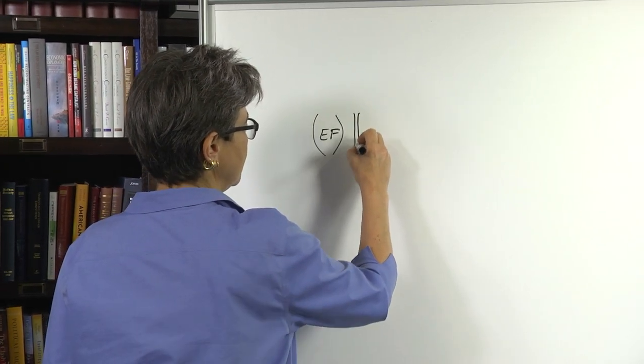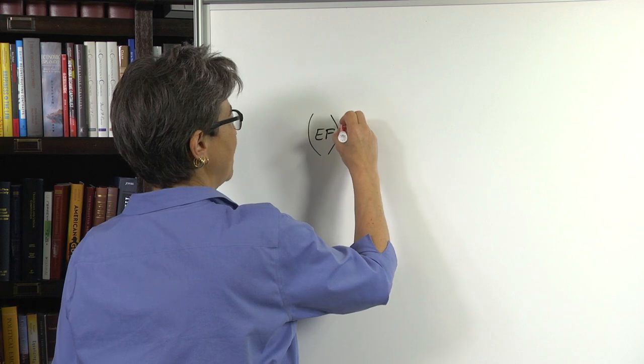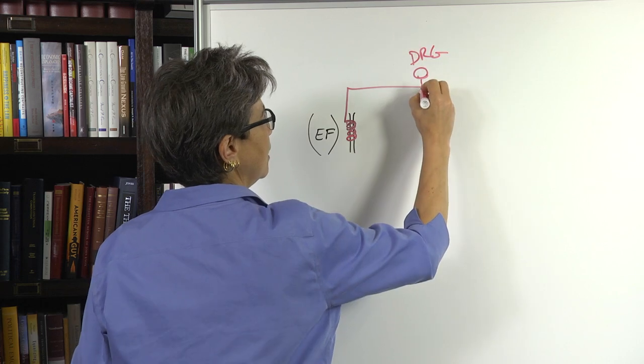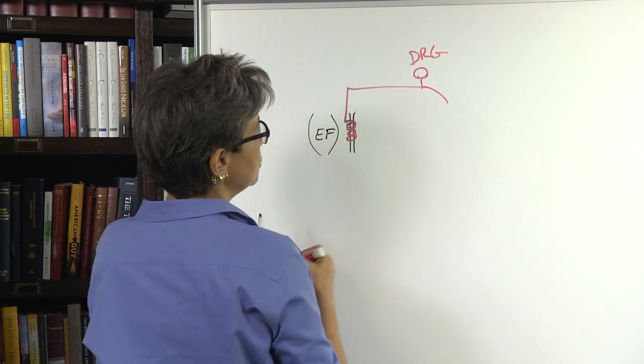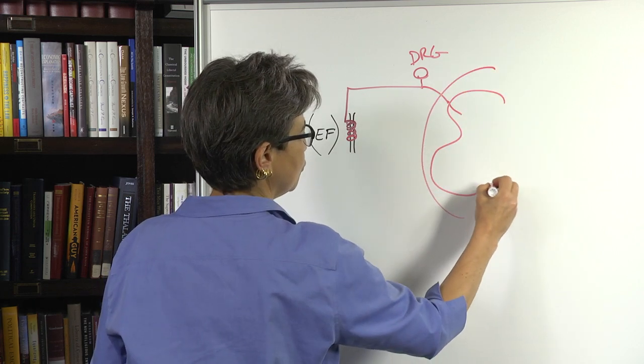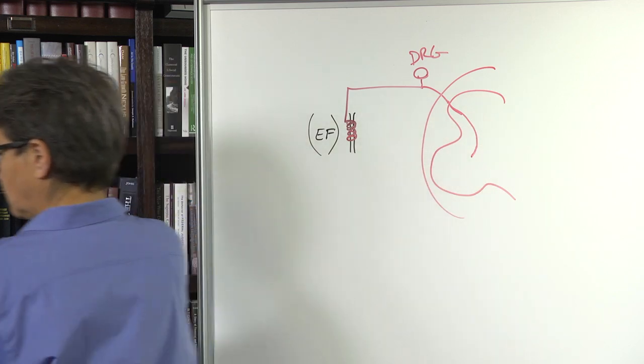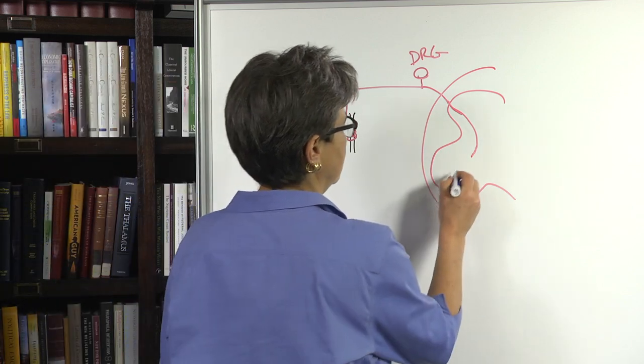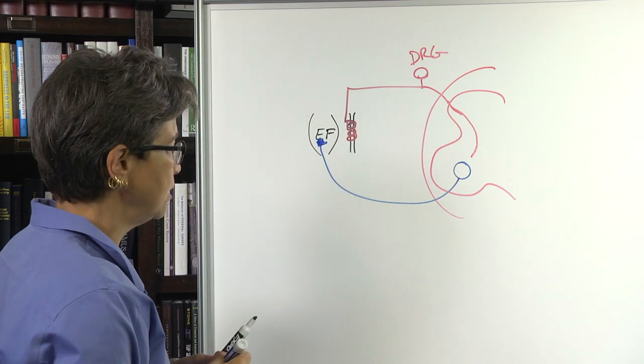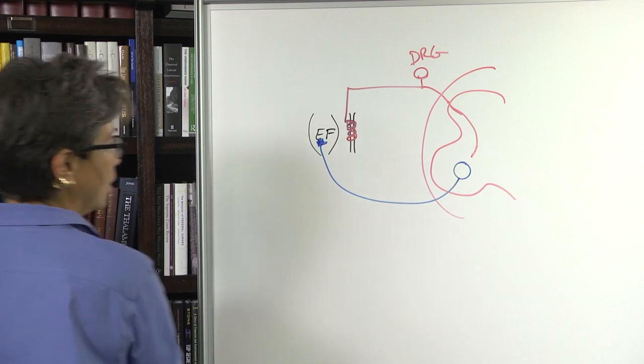So here is the extrafusal fiber. Here's the intrafusal fiber. Here there's a 1A afferent that wraps around here, has its cell body in the DRG, and then goes into the spinal cord, goes streaming through the dorsal horn and intermediate gray, and goes directly to a motor neuron that innervates the extrafusal fibers in the homonymous muscle.